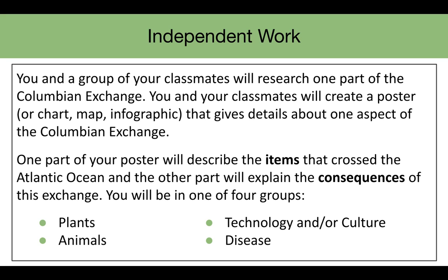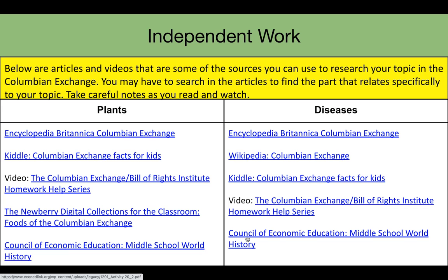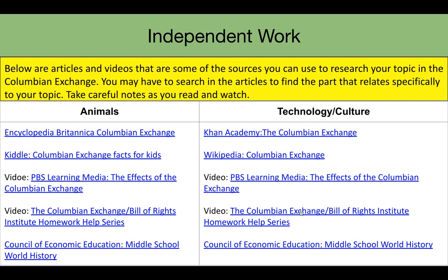Today, for your independent work, you and a group of your classmates will be researching one part of the Columbian Exchange and creating a poster, chart, map, or infographic that gives detail about one aspect of it. One part of your poster will describe the items that crossed the Atlantic Ocean, and the other parts will explain the consequences of this exchange. You will be in one of four groups: plants, animals, technology and/or culture, and disease. Below are some articles and videos you may use to further research your topic — plant resources, disease resources, animal resources, and technology and culture resources.